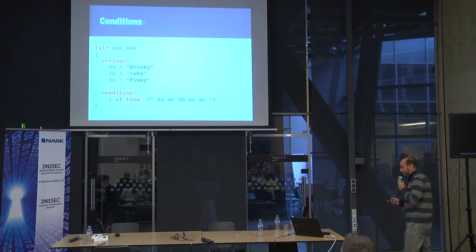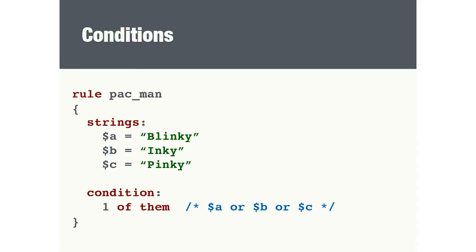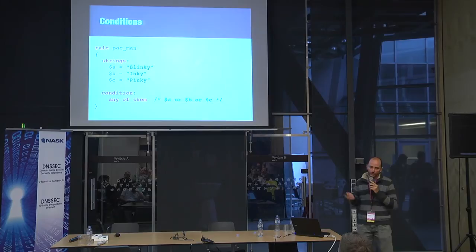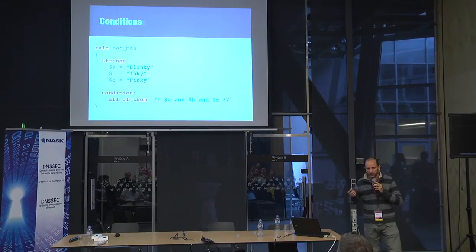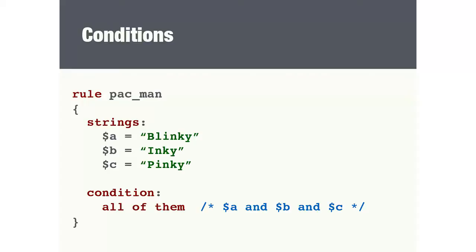You can also change the number: 'one of them' is equivalent to A or B or C. You can say 'any of them', which is the same thing — just syntactic sugar. Or you can say 'all of them', which changes the meaning to A and B and C.